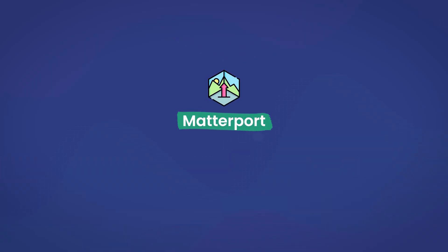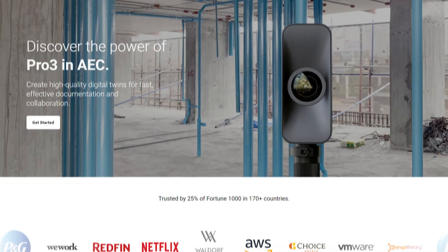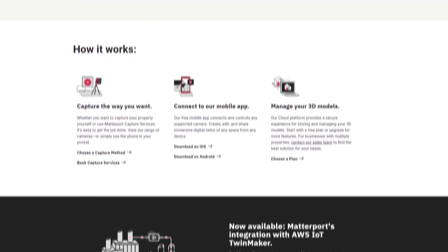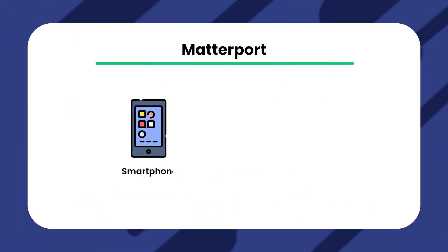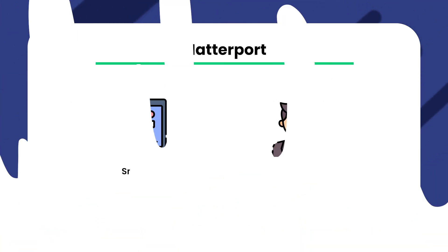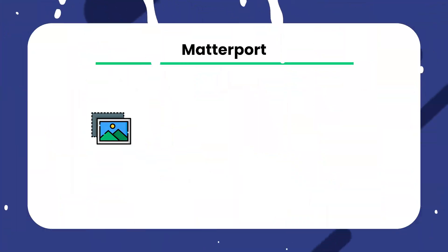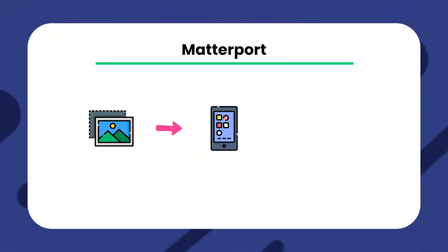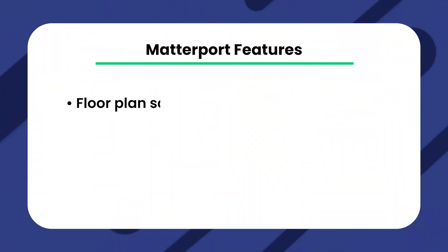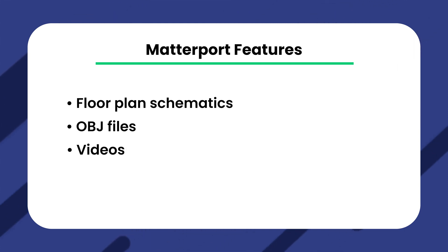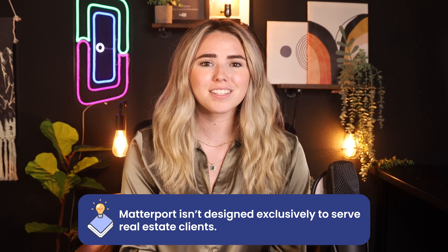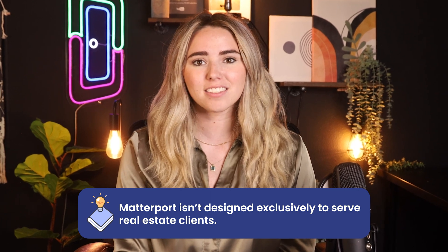Next up is Matterport. Matterport is worth taking a look at thanks to its impressive array of features and powerful 3D tools. It gives you many different ways to capture images — from using your own smartphone to booking capture services from Matterport professionals. Once pictures are taken, you'll connect to Matterport's free mobile app to edit and upload them. After that, you can use a free plan or sign up for a paid option to manage your 3D tours and take advantage of add-on features like floor plan schematics, OBJ files, videos, and other media options. The main thing to know is that Matterport isn't designed exclusively for real estate like Asteroom is, making it a little harder to navigate, though you'll get access to extra features with this tool.